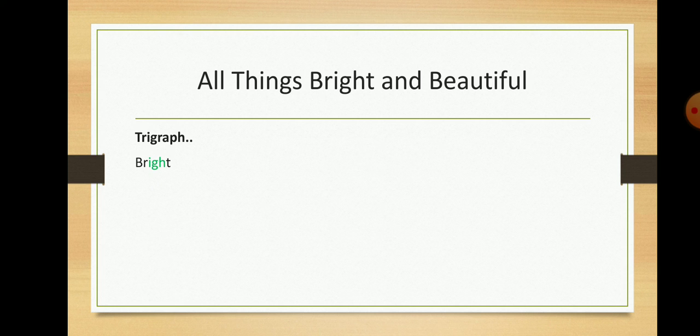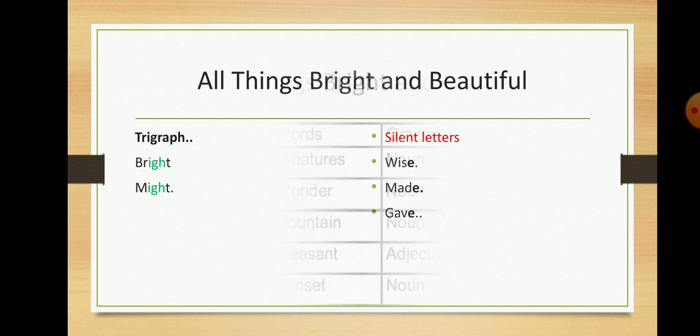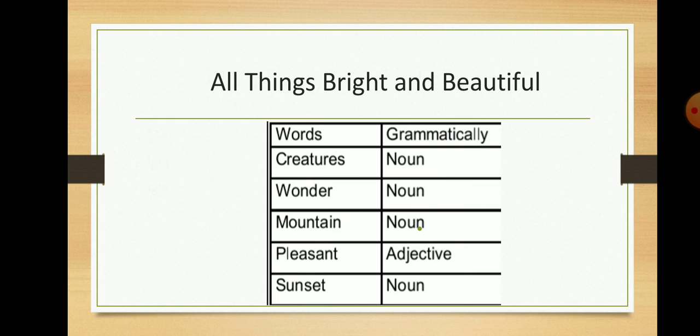Bright mein 'igh' - ye trigraph hai. Might mein 'igh'. Next, silent letters. Wise mein 'e', made mein 'e', gave mein 'e'. 'All Things Bright and Beautiful' poem mein kuch aise words hain jin ko humne grammatically mention kiya hai ke grammar mein ye kya kya words hain.